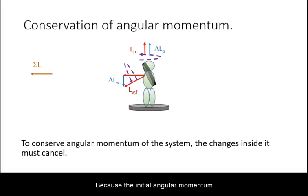Because the initial angular momentum of the person was zero, hence their final angular momentum must equal this change in angular momentum.